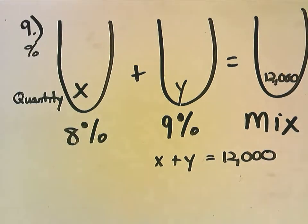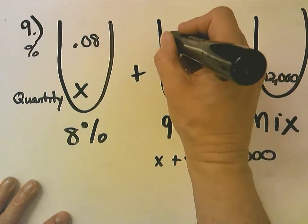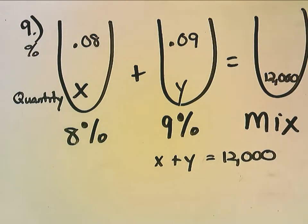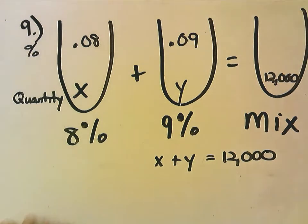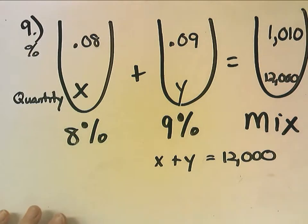Now, 8% investment would be .08, a 9% investment would be .09. Now, it does not give me a rate, a percentage, for my mixture, but it tells me I earned $1,010.